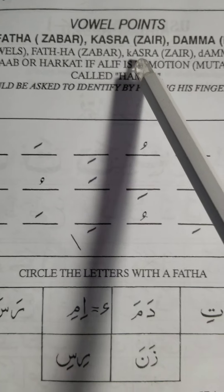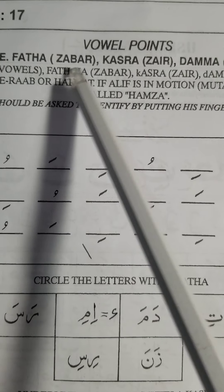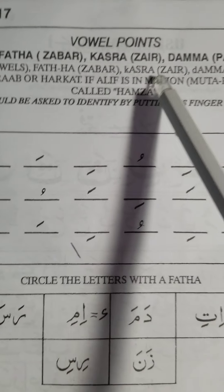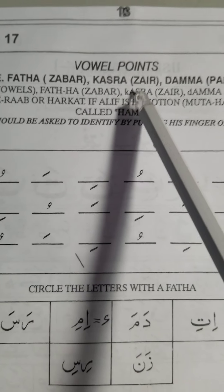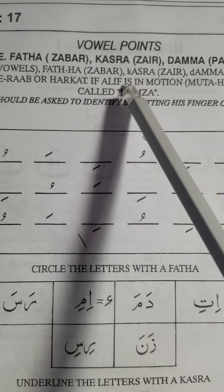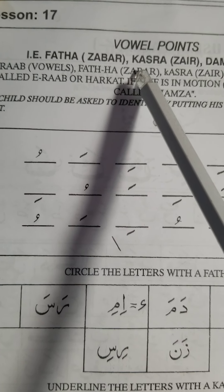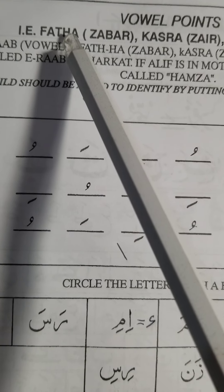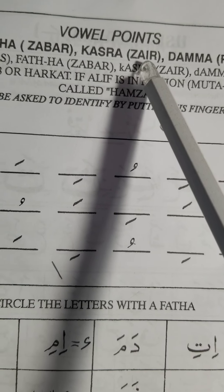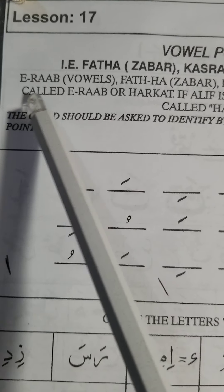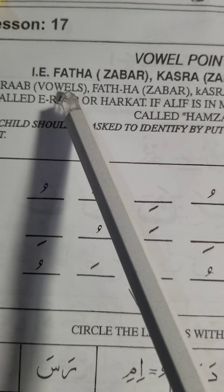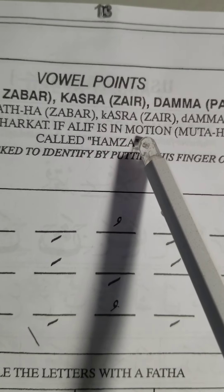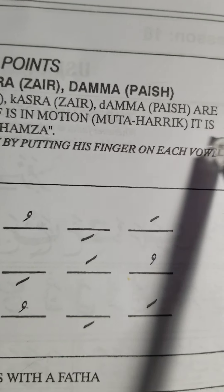Zhabar, kasra, zheir, damma, pesh. In Urdu it's called zhabar, zheir, pesh — in Afghanistan and Pakistan too. In Somalia, I heard they say 'kisra' instead of 'kasra' — a really sweet pronunciation. The first example: fatha, zhabar, kasra, zheir, damma, pesh. These are called 'arab' or 'harakat' — meaning vowels. If an alif is in motion, it is called mutaharrik.